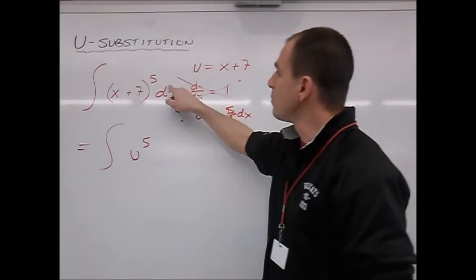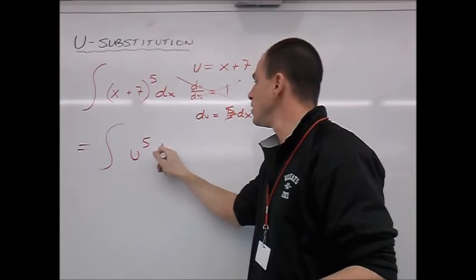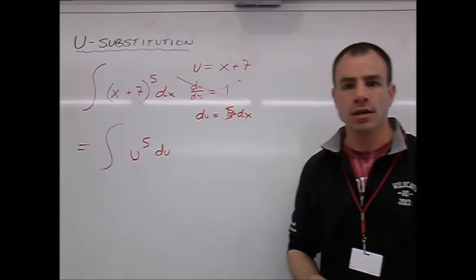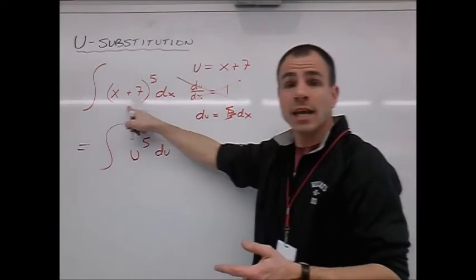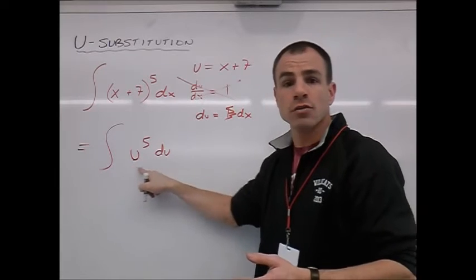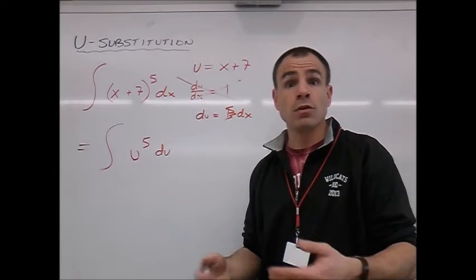What does that mean? We can sub dx out of the integrand, and we can sub du into the integrand. So we now have u to the 5th du. We've taken an integral which we cannot antiderive, and we've turned it into one which we can antiderive. This is a nice basic antiderivative to do. Let's do it.